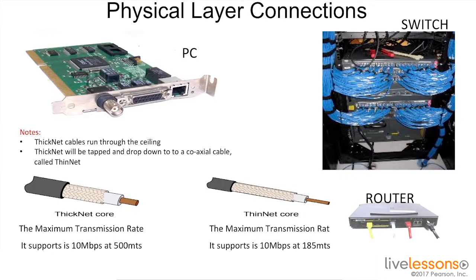There are many different physical layer connections which are defined by the Ethernet standards. One that you may not be as familiar with is something called coaxial cabling. It used to be that we used coaxial cabling for connectivity between devices. We would use thick net through the ceiling and thin net to come down from the ceiling to the actual devices. We would have to use BNC type connectors and attenuators in certain circumstances. You obviously still see service providers using coaxial cable today.